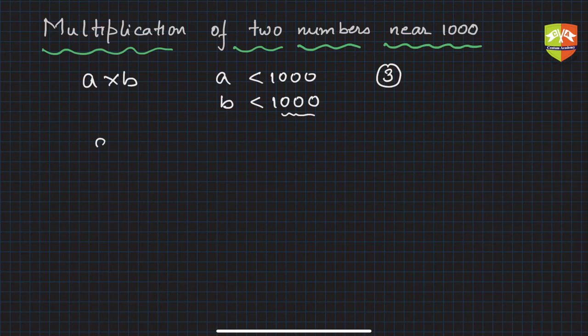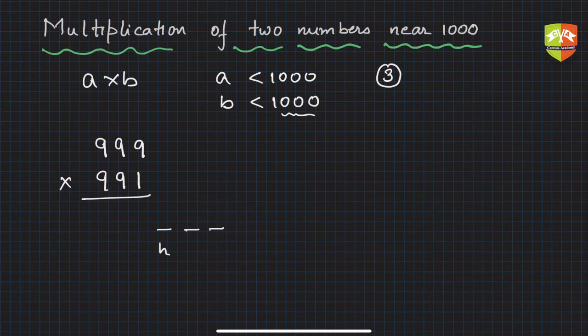Let's say I am multiplying 999 × 991. This looks like a very big tedious multiplication. See with this technique how quickly you can solve this. You have to reserve three digits for the hundreds, tens, and units place—HTU. How to get this?